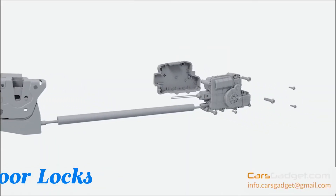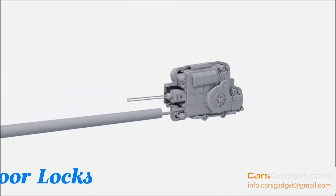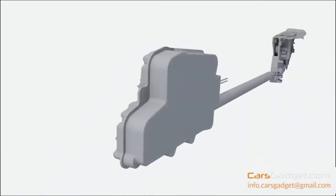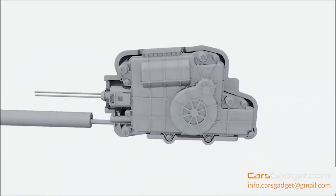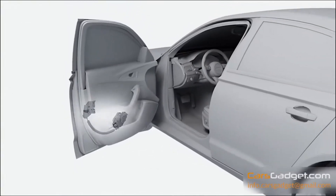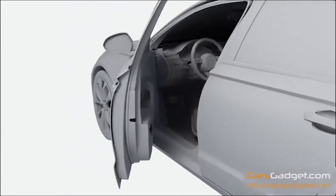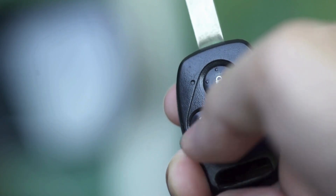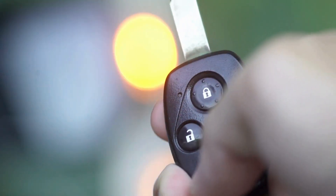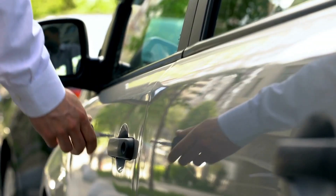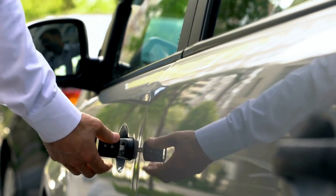Door locks control latching mechanisms that secure doors in the shut position. Manual locks have levers while power locks use electric motors or vacuum actuators. Keyed locks provide security, while keyless systems use remote fobs or touch sensors for convenience. Child safety locks prevent rear doors from being opened accidentally.